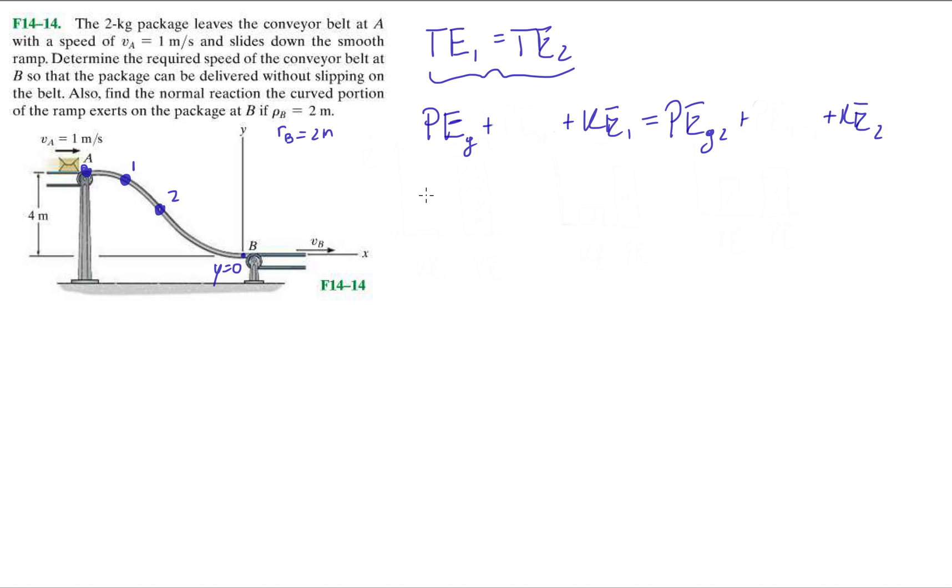When we sum up the potential energy at state 1, we're going to do mg, the weight times the height, which is 4, plus the kinetic energy of the box. Remember, kinetic energy is 1 half mv squared. Plus nothing else. There's no other forces. We don't have friction.